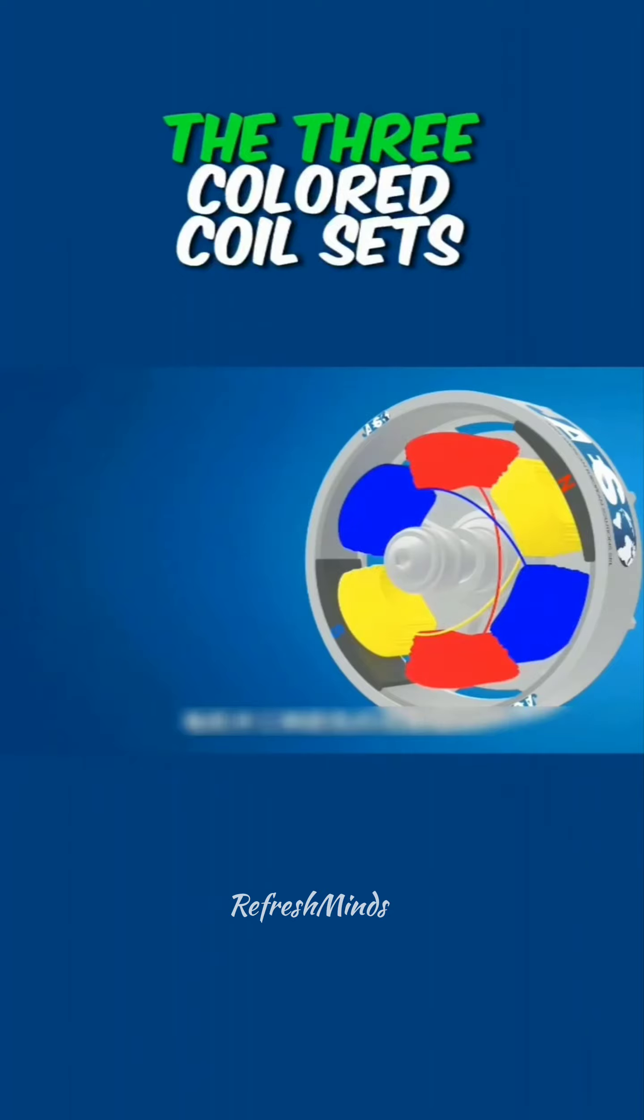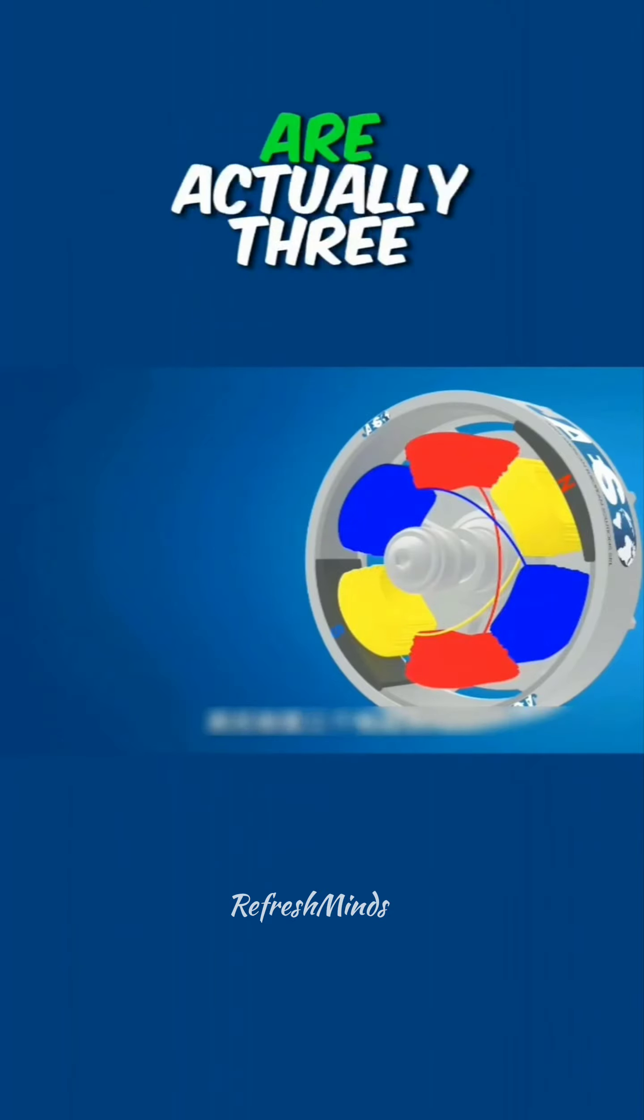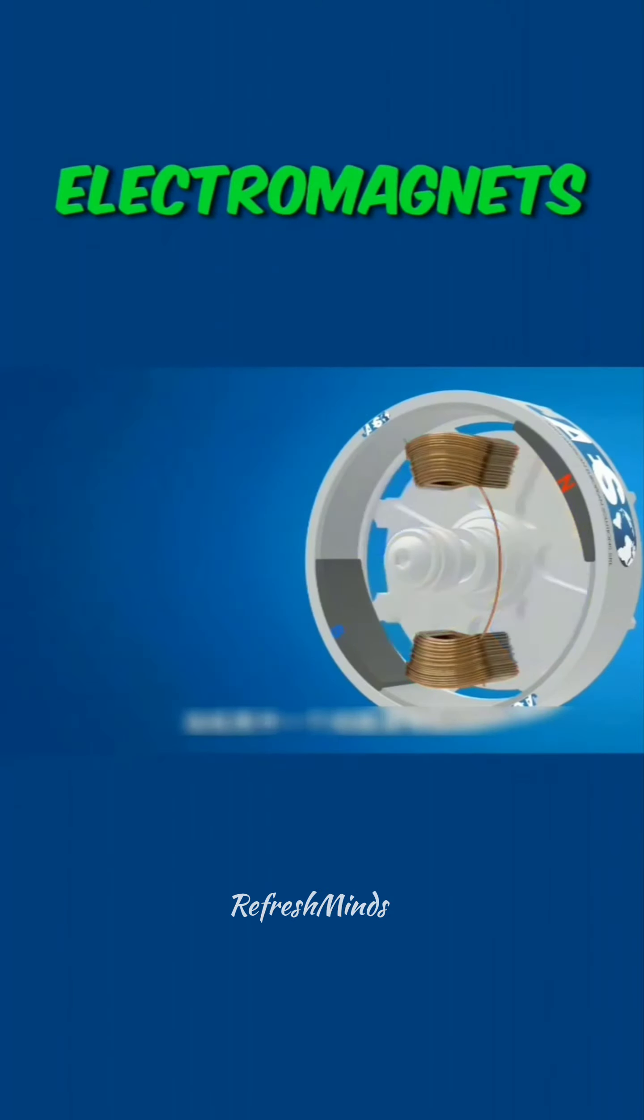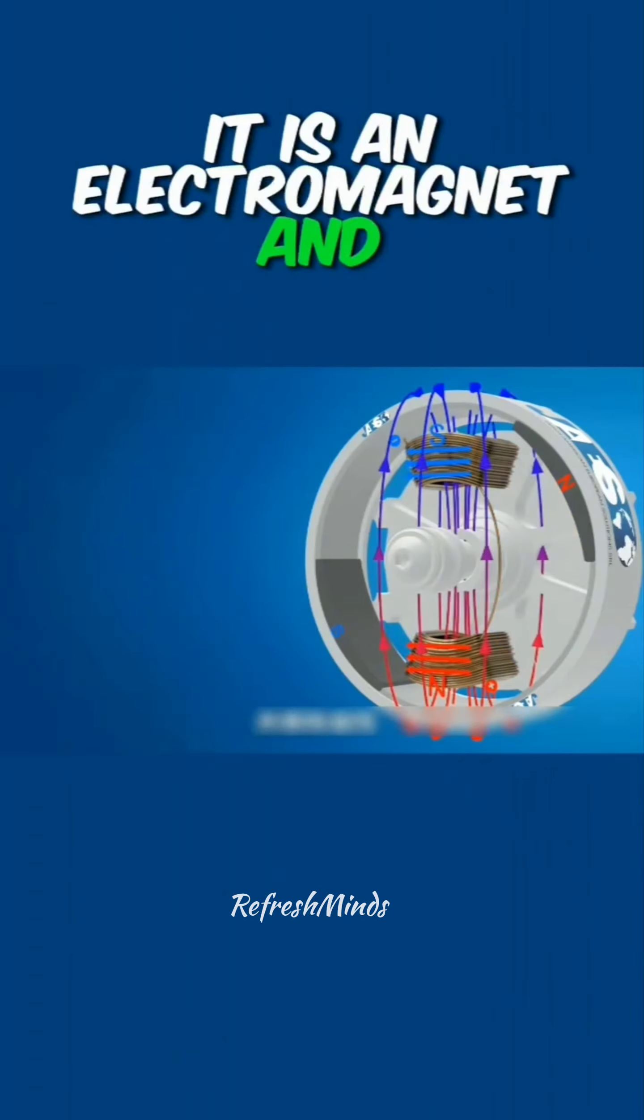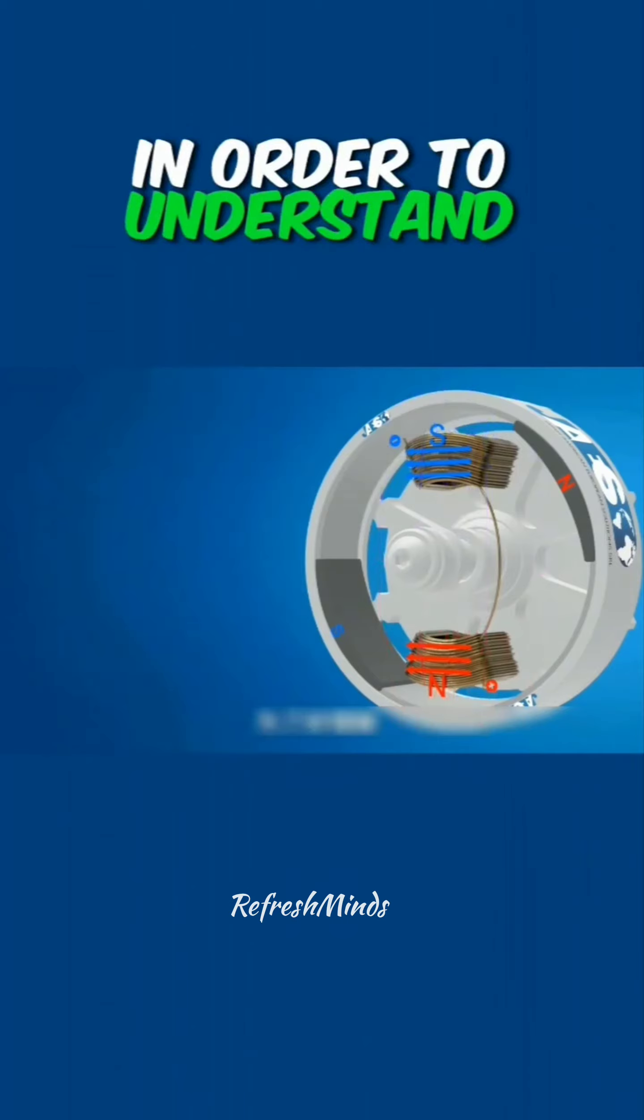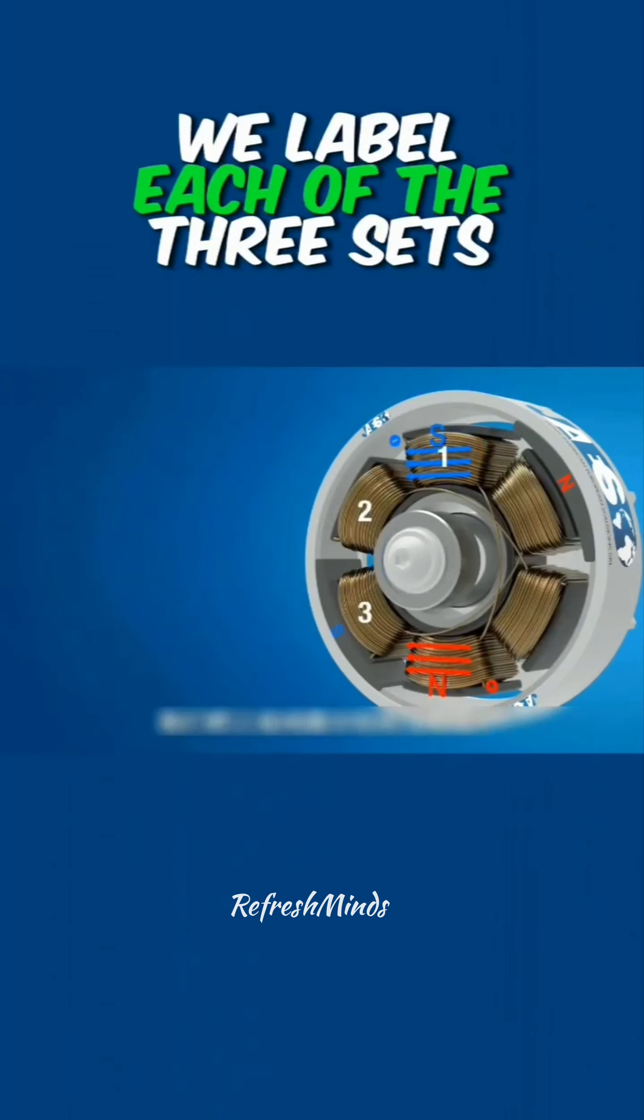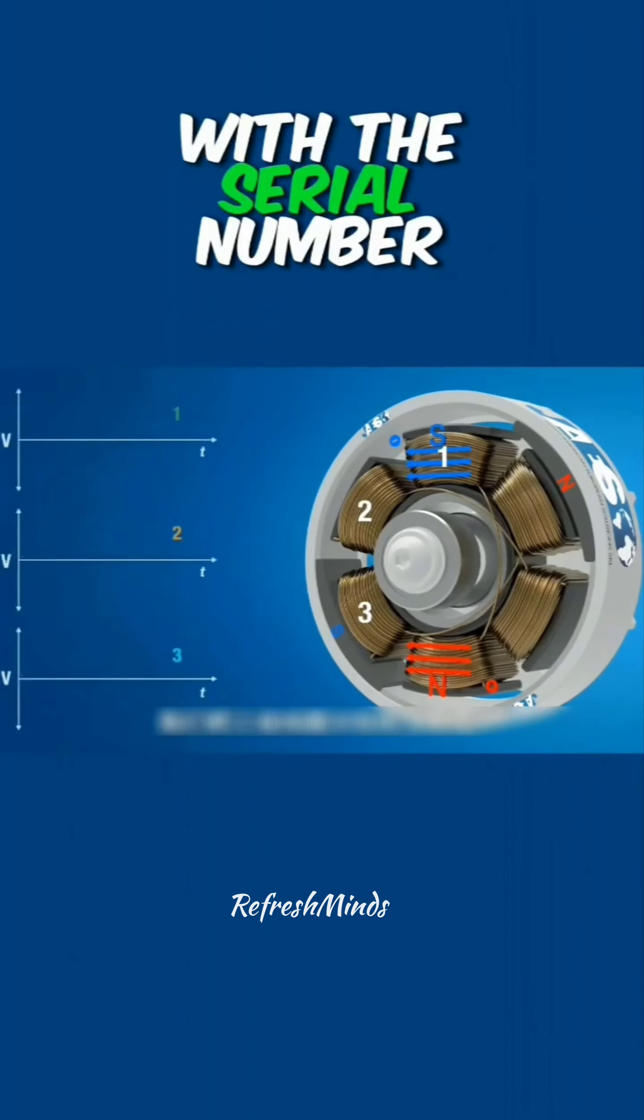As shown in the figure, the three colored coil sets in the motor are actually three electromagnets. When one of the coils is energized, it is an electromagnet and possesses magnetism. In order to understand, we label each of the three sets of coils with the serial number.